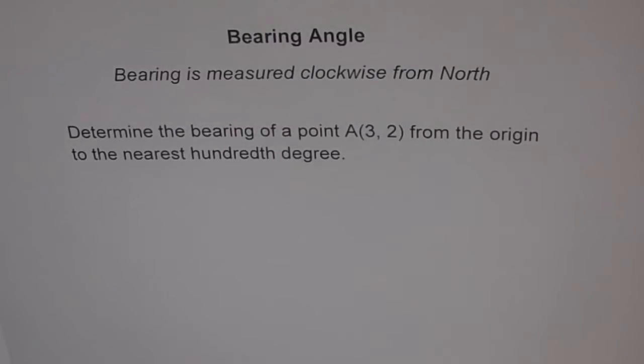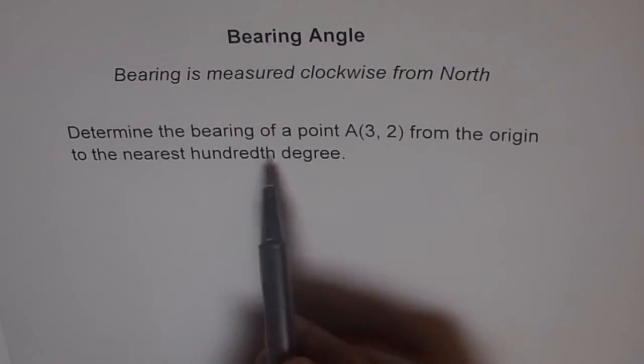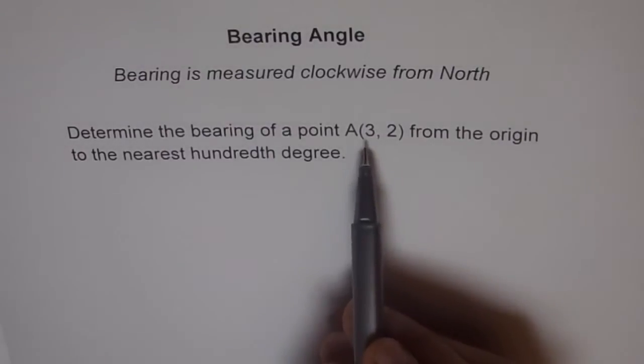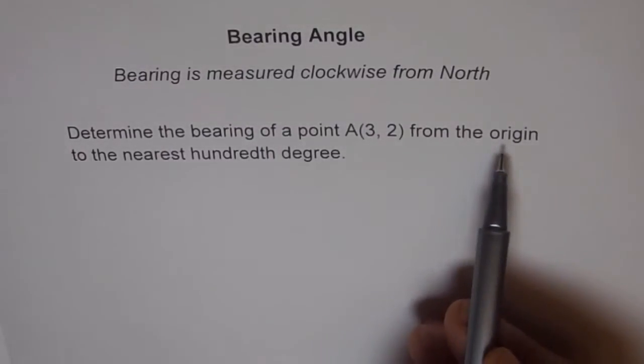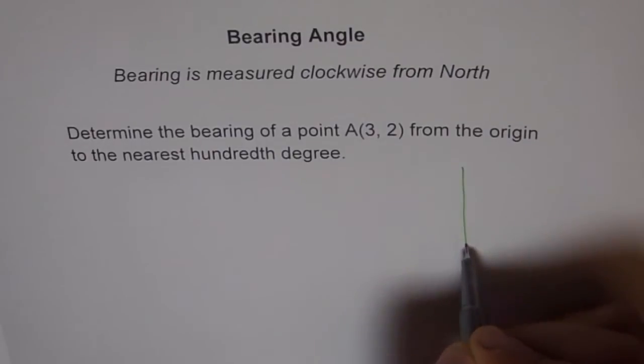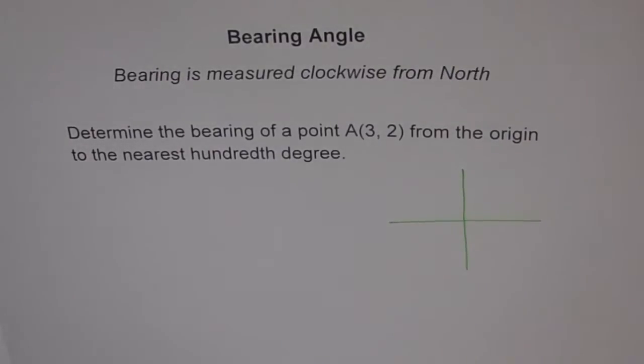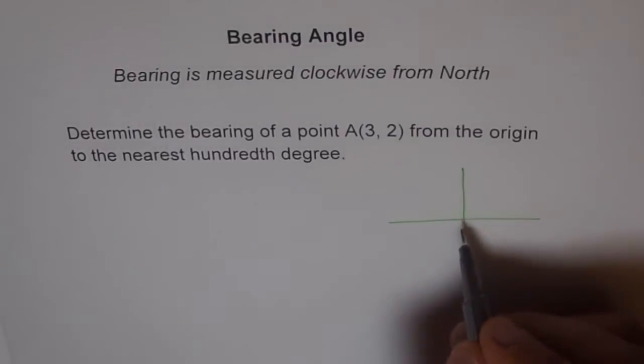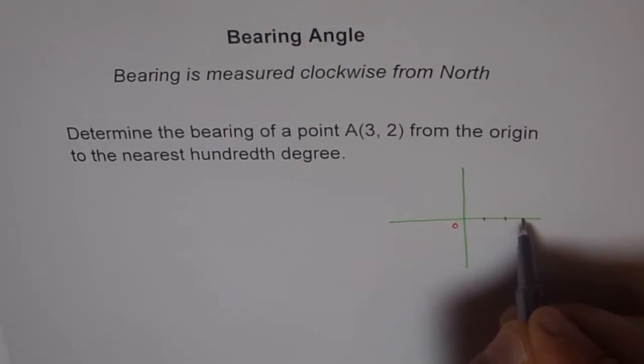Now here the question is, determine the bearing of a point A(3,2) from origin to the nearest hundredth of a degree. So what does it mean? In our coordinate system, origin is right at the center and this point A is at 3,2. So that means x is 3, let's say 1,2,3 and y is 1,2 here.